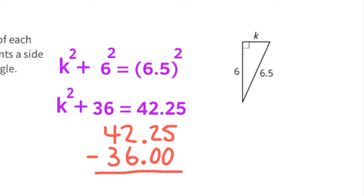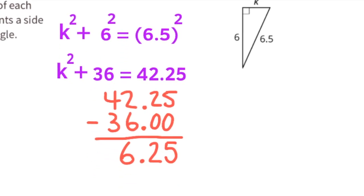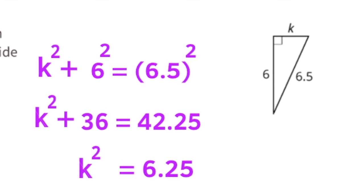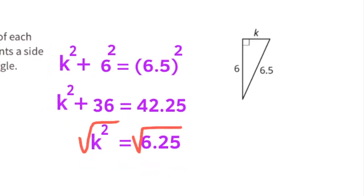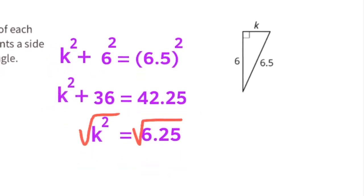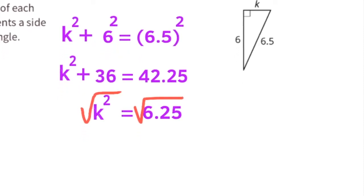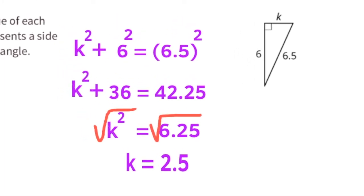We need to subtract 36 from 42.25: 42.25 − 36 = 6.25, so k² = 6.25. The square root of 6.25 is 2.5, so the side length k is 2.5 units.